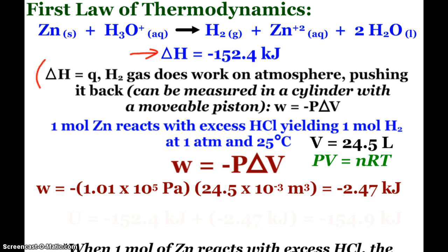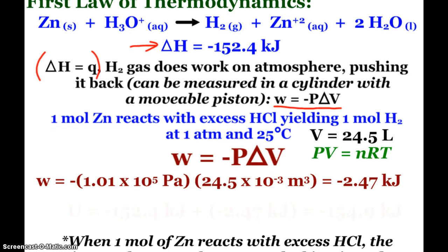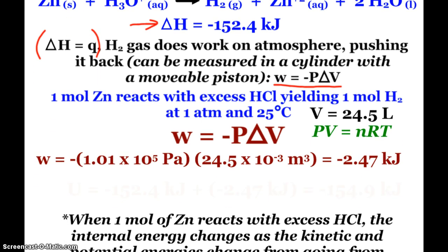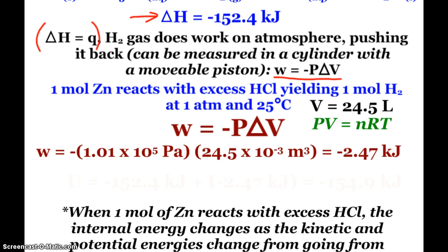So my delta H equals Q, which we'll discuss a little more in depth in a moment. And the work is negative P delta V, pressure volume work. And so if I have one mole of zinc reacting with an excess of hydrochloric acid, I will yield one mole of hydrogen. And this is at a nice pressure of one atmosphere and temperature of 25 degrees Celsius.